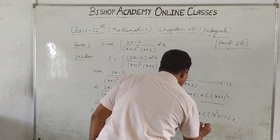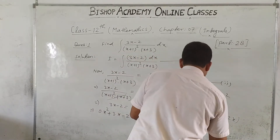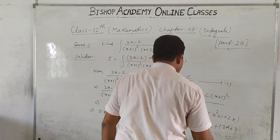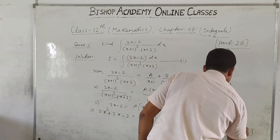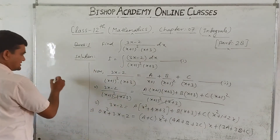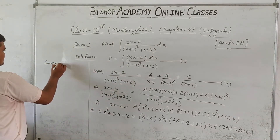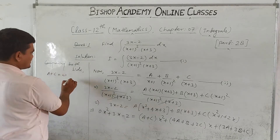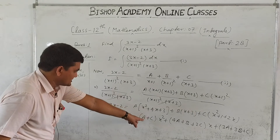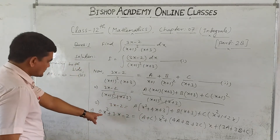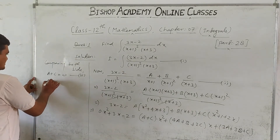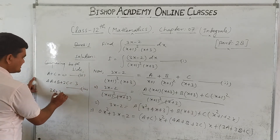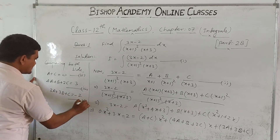...plus (4A + B + 2C)·x plus (3A + 3B + C). Comparing both sides: the coefficient of x² gives A + C = 0, equation 3. The coefficient of x gives 4A + B + 2C = 3, equation 4. The constant term gives 3A + 3B + C = -2, equation 5.